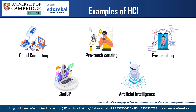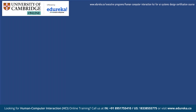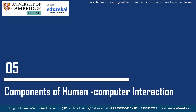Artificial intelligence: HCI with AI involves including artificial intelligence in the design of human-computer interfaces. This collaboration aims to improve user experiences by integrating AI capabilities such as natural language processing and machine learning into interactive systems. Now you have a clear picture of the examples of HCI; let's move on to the components.